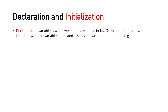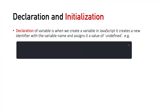Declaration of a variable is when we create a variable in JavaScript — it creates a new identifier with the variable name and assigns it a value of undefined. For example, if we declare a variable 'a' and we have not assigned any value to it, by default the value of 'a' would be undefined, and you can verify this by logging the value of 'a', which will give you undefined.